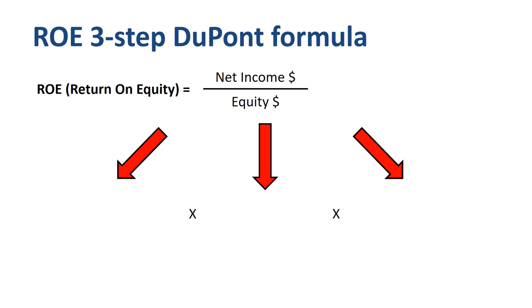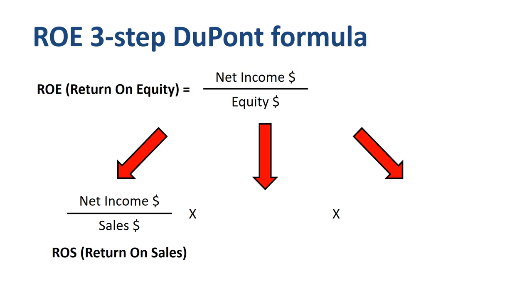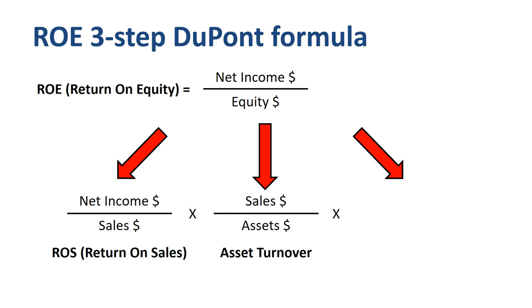The first element, ROS or Return on Sales, is net income divided by sales, which is an indicator of the relative profitability or operating efficiency. How many cents of profit are generated for every dollar of sales? The higher the ROS, the better. The second element is asset turnover, calculated as sales divided by assets — a measure of asset use efficiency. Can we maximize the amount of sales we generate with the assets that we have?